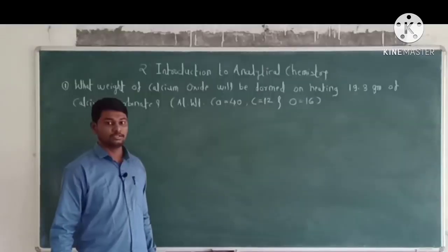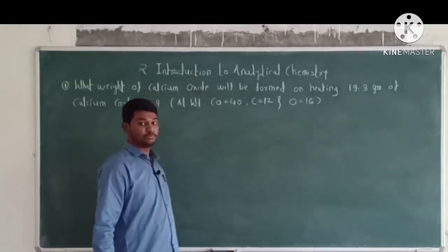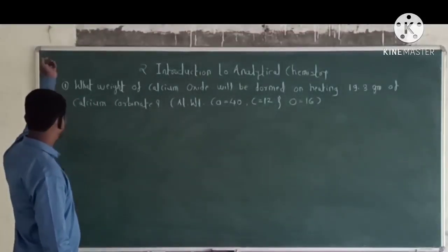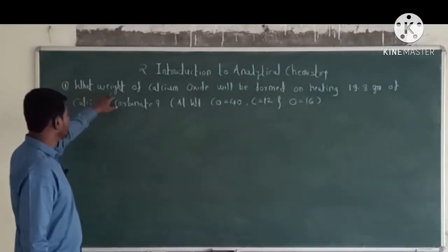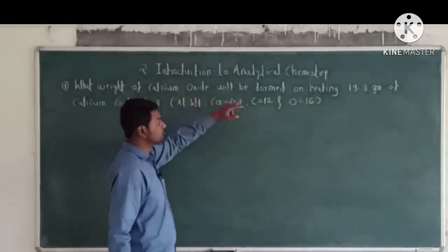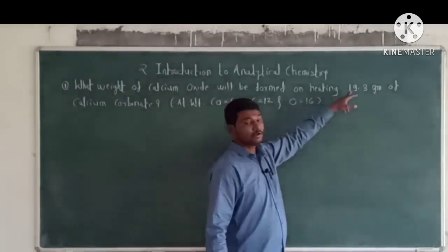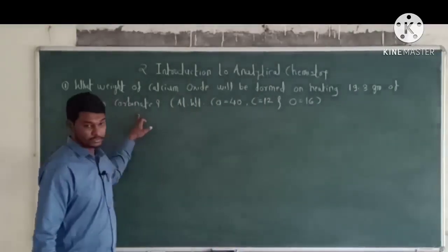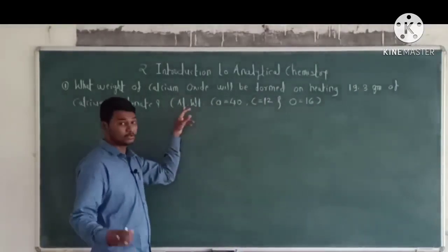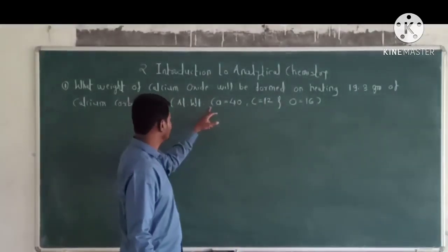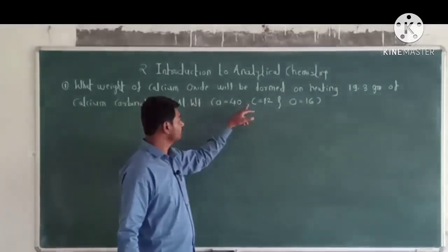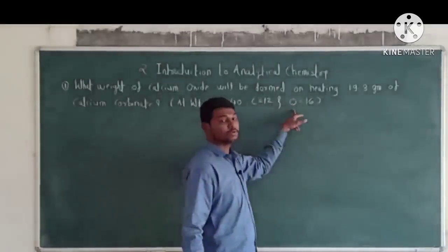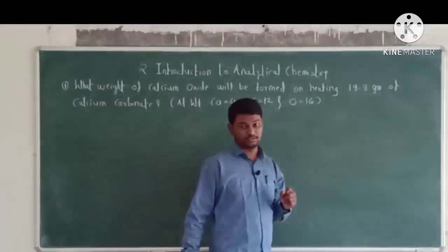Next, we solve a stoichiometric numerical problem. Problem: What weight of calcium oxide will be formed on heating 19.3 grams of calcium carbonate? Given atomic weights: calcium = 40, carbon = 12, oxygen = 16.